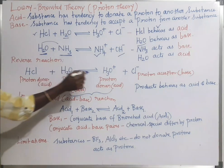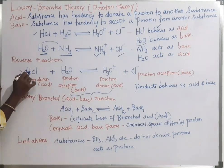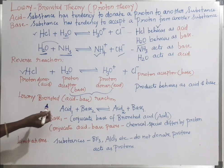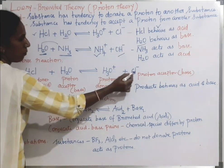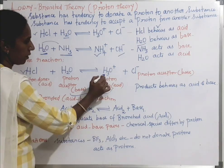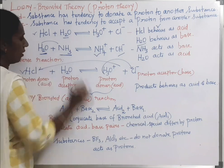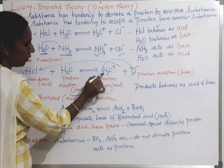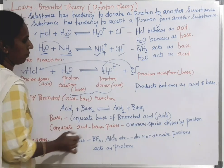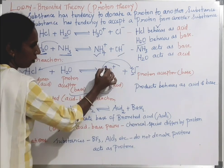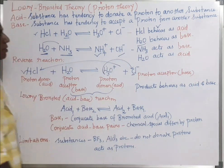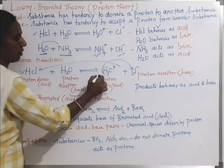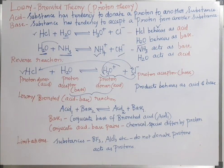Now let us see the reverse reaction. In HCl + H₂O → H₃O⁺ + Cl⁻, HCl is the proton donor (acid) and H₂O is the proton acceptor (base). In the reverse direction, H₃O⁺ donates a proton to Cl⁻ to form HCl, so H₃O⁺ is the proton donor (acid) and Cl⁻ is the proton acceptor (base). Thus the products H₃O⁺ and Cl⁻ also behave as an acid and base respectively.